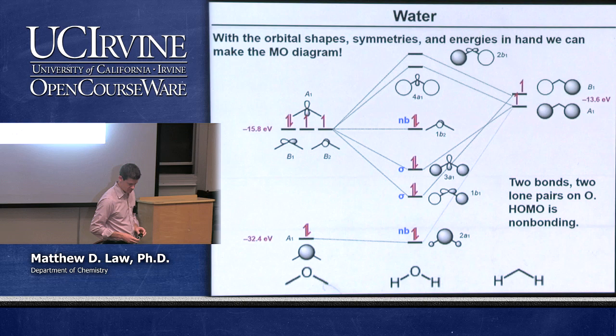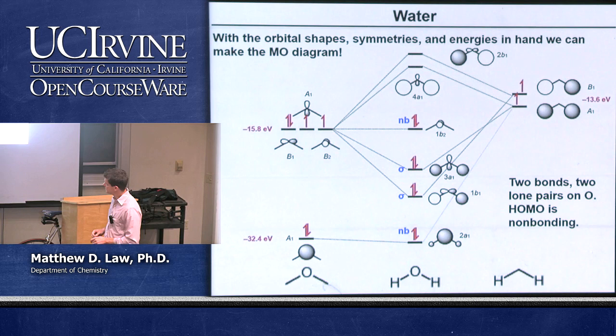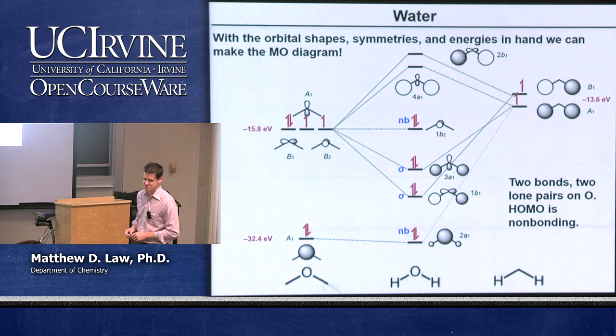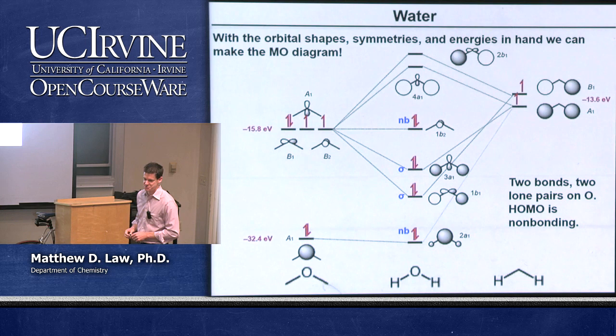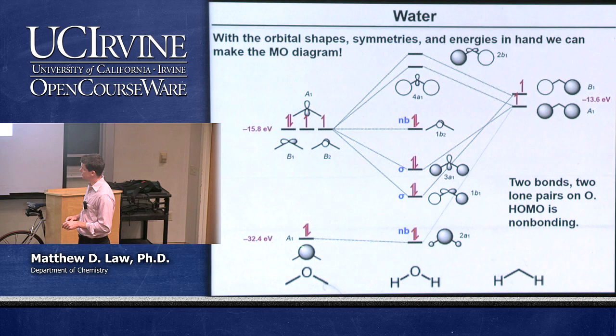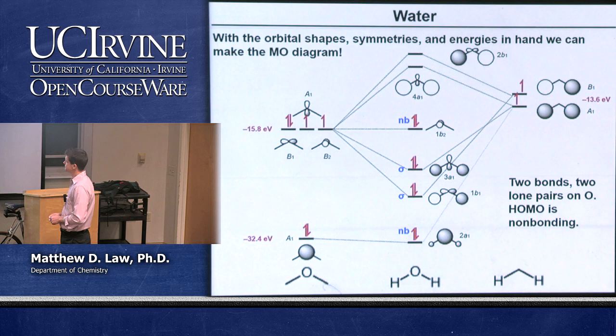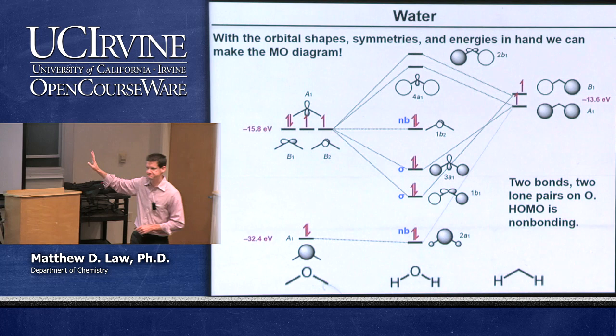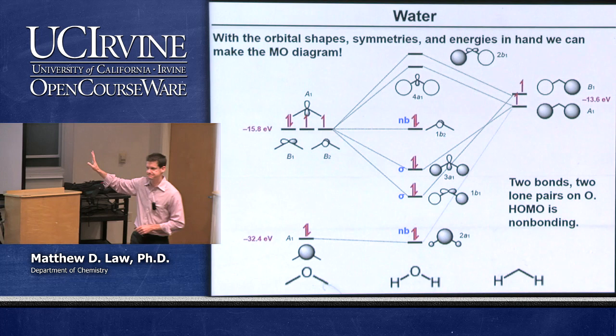Student question: do we consider anything with a symmetry match to have even a little bonding character, like the bottom non-bonding orbital? Yes — that orbital is roughly 95% non-bonding and 5% bonding. The symmetry match allows interaction, but the energy difference between the oxygen 2s and the hydrogen group orbitals is so large that the interaction is almost negligible. An interaction is only rigorously zero when symmetry forbids it entirely. Other questions about water? A nice clean MO diagram.